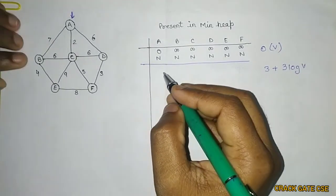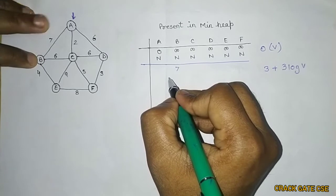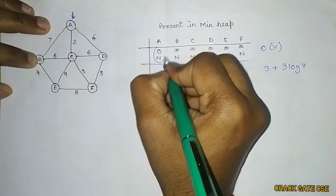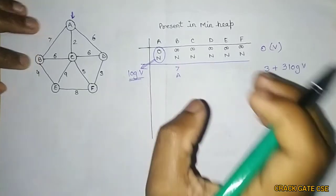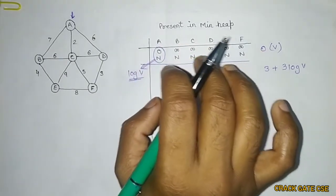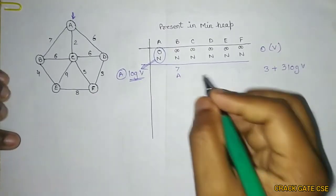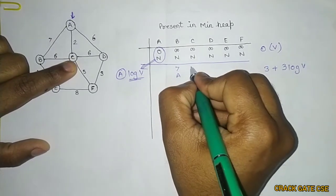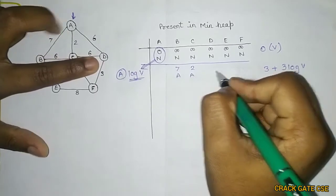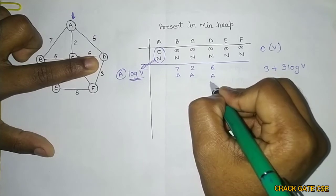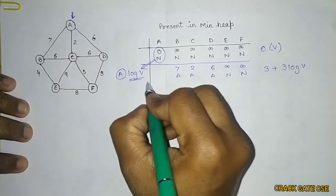Now let's update the values. For B: earlier it was infinite; going from A to B costs 7, so key becomes 7 with parent A. For C: cost is 2, parent A. For D: value is 6, parent A. For E and F, values remain infinite with null parent. Deleting A from the min heap takes O(log V) time.